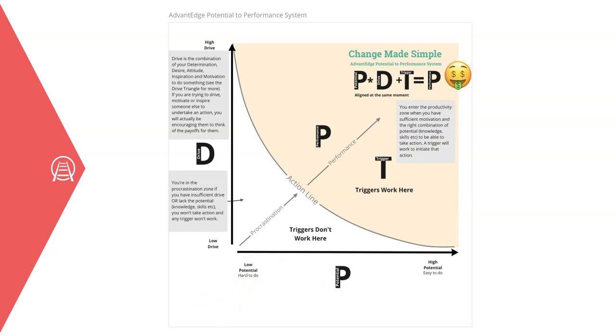On the other hand, if someone has low drive to donate to the stray dogs and if it's hard for them to do, they will be in the lower left corner. When triggered, that person will not perform the action. They are in the procrastination zone.